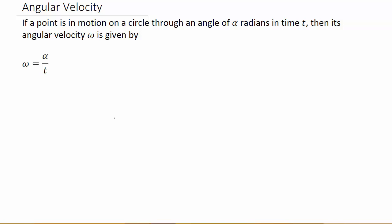Alright, so let's look at the third example for angular velocity. If a point is in motion on a circle through an angle of alpha radians in time t, then its angular velocity omega is given by omega equals alpha over t.